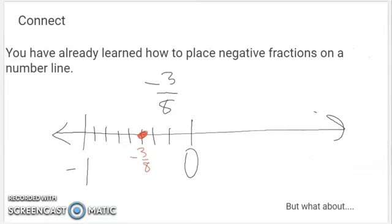We dealt with negative fractions on a number line yesterday. This is one of the 'what should you be forgetting today' questions. So if I wanted to show negative three eighths on a number line, it's less than zero, so I put it on the negative side. If that is one, I partitioned my area between zero and one into eighths — one, two, three, four, five, six, seven eighths. And negative three eighths is three eighths away from zero, so it's a little closer to zero than to negative one.